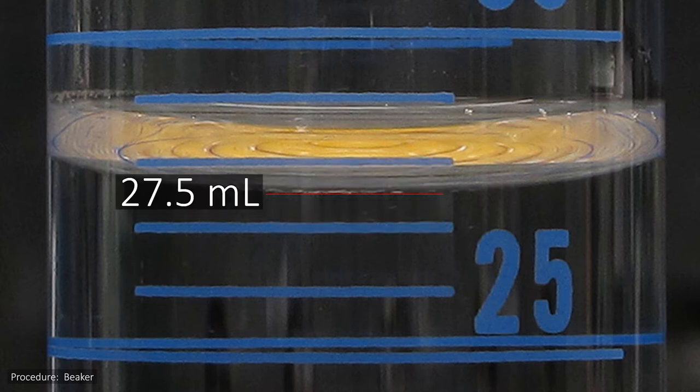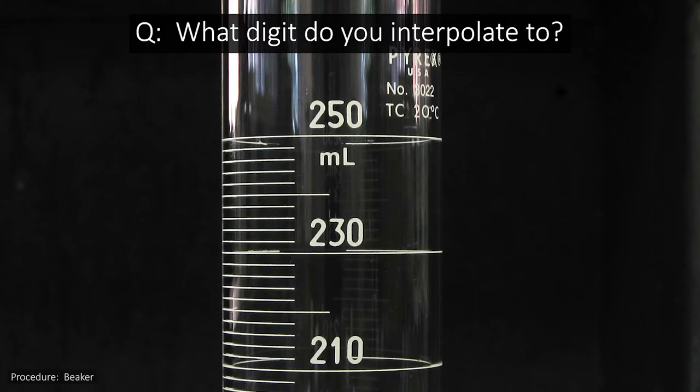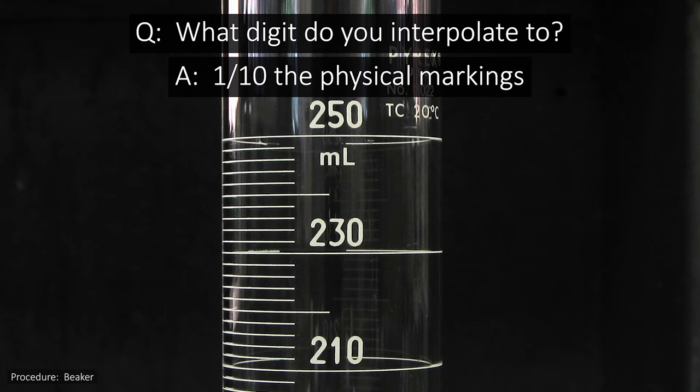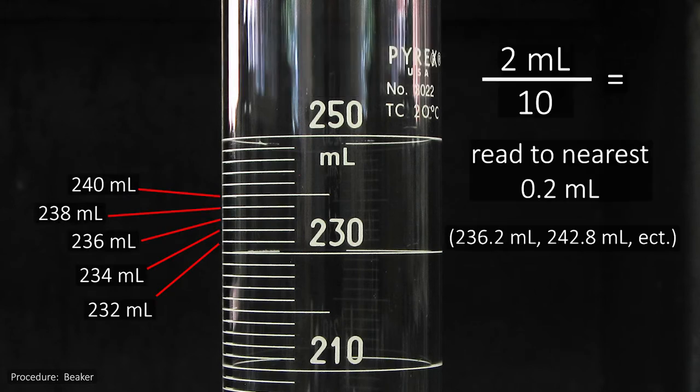so we would read and record this as 27.5 milliliters. If you're trying to read a piece of glassware and you're not sure what you're supposed to interpolate to, just take the actual physical markings on the piece you're working with and divide by 10. This graduated cylinder's markings go up in increments of 2 milliliters, so you would read and record this one to the nearest 0.2 milliliters.